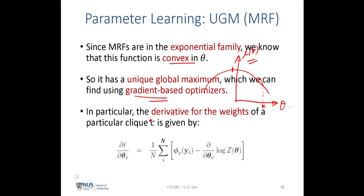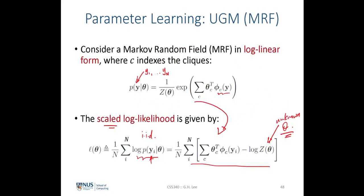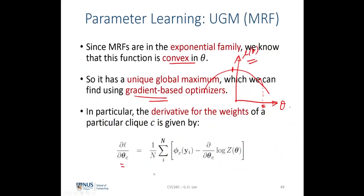We take the partial derivative of the cost function L over the clique potential parameters, which we define as theta_c, for every clique potential parameter. The first term is easy to partially differentiate over theta_c — we simply ignore the other terms and the coefficient terms remain, since we are partially differentiating with respect to theta_c.